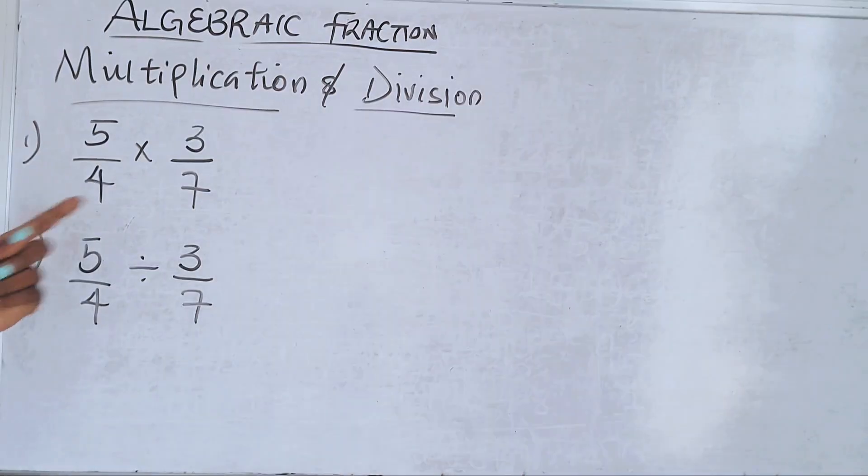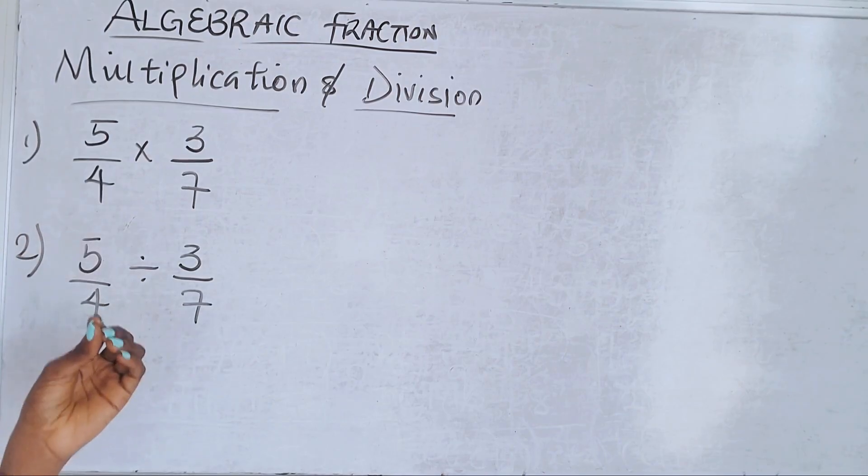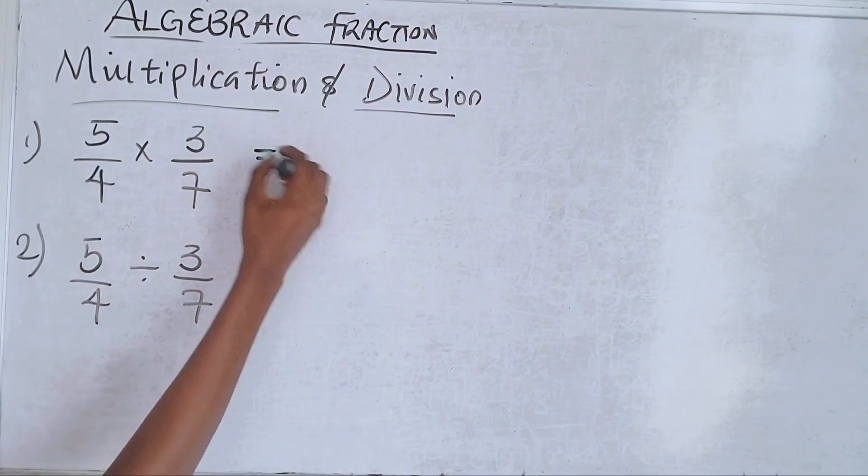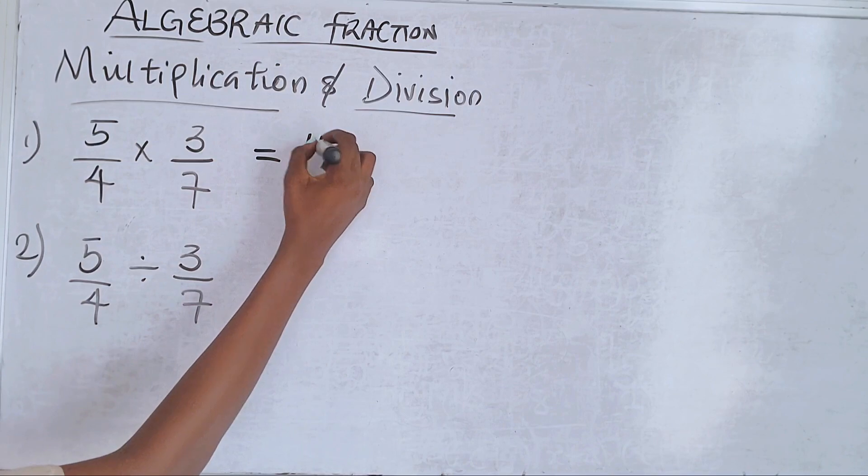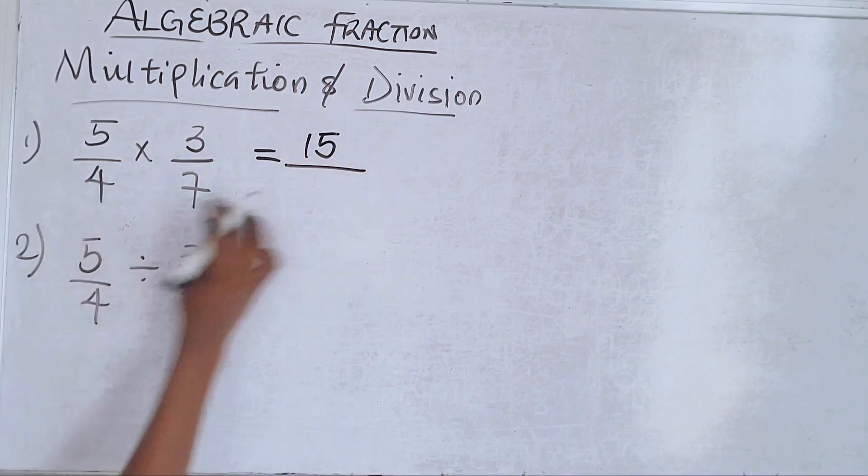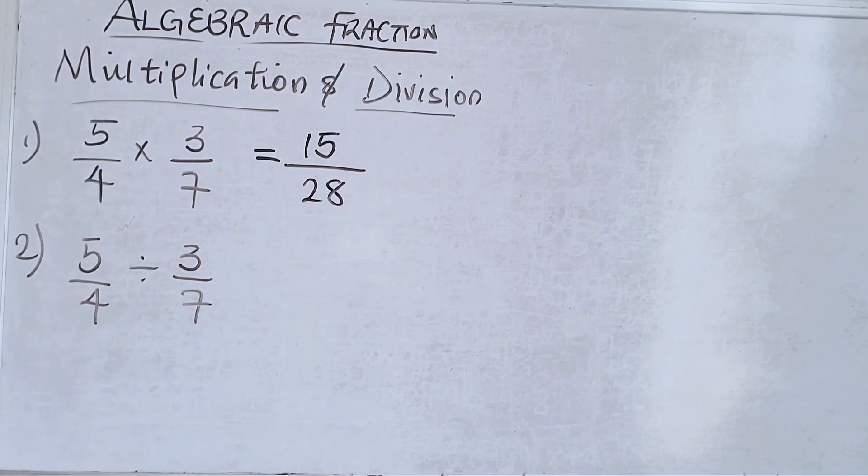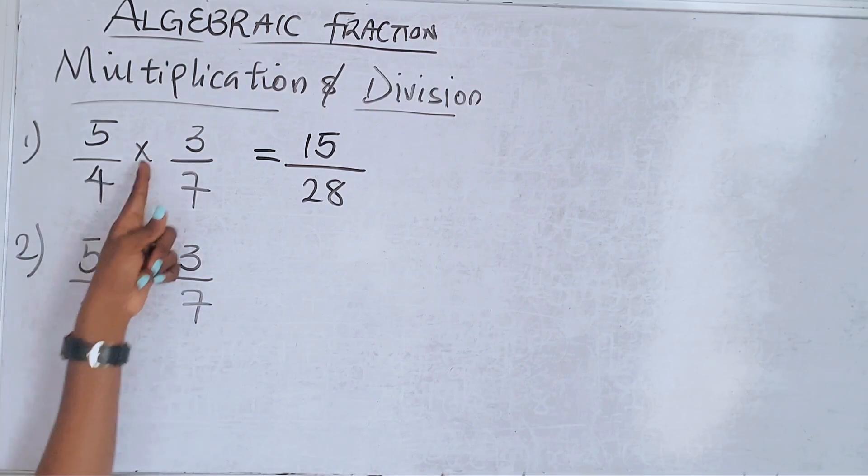When you're asked to multiply two fractions, you just go straightforward - it's the easiest. So 5/4 times 3/7: 5 times 3 is 15, 4 times 7 is 28. But make sure you know your multiplication table.